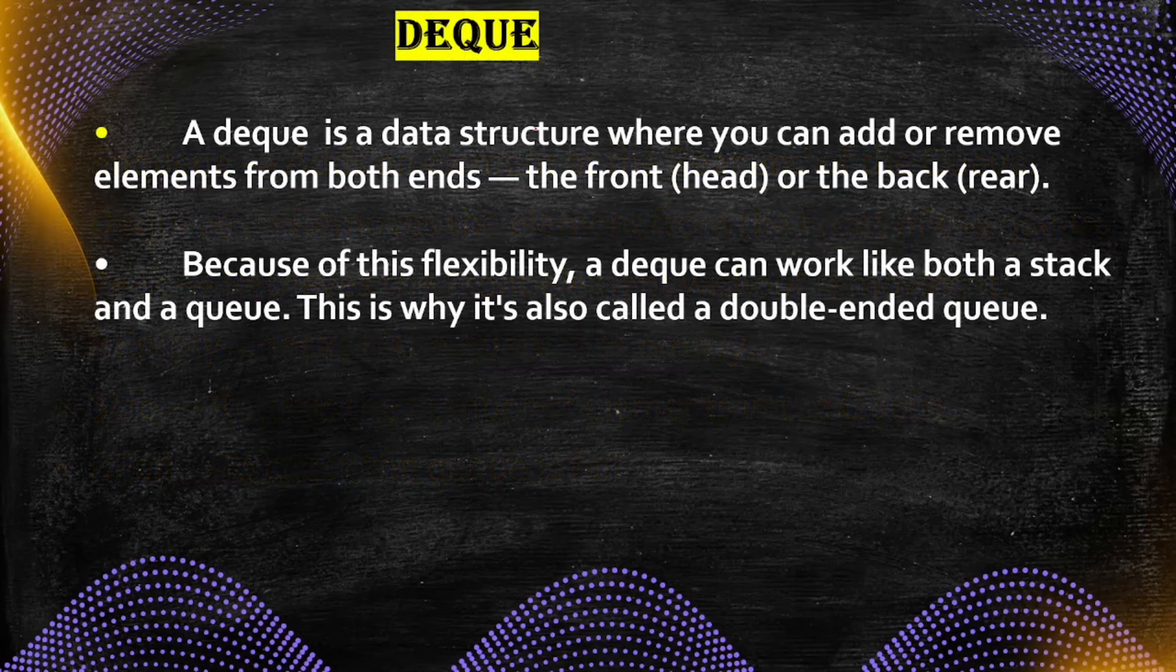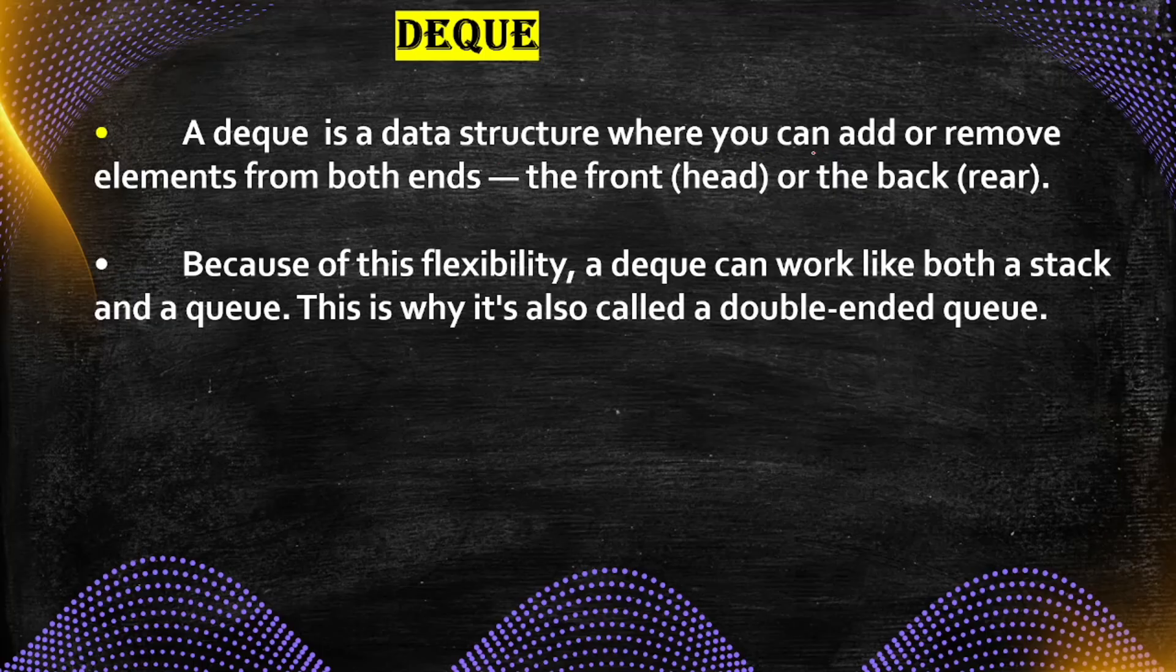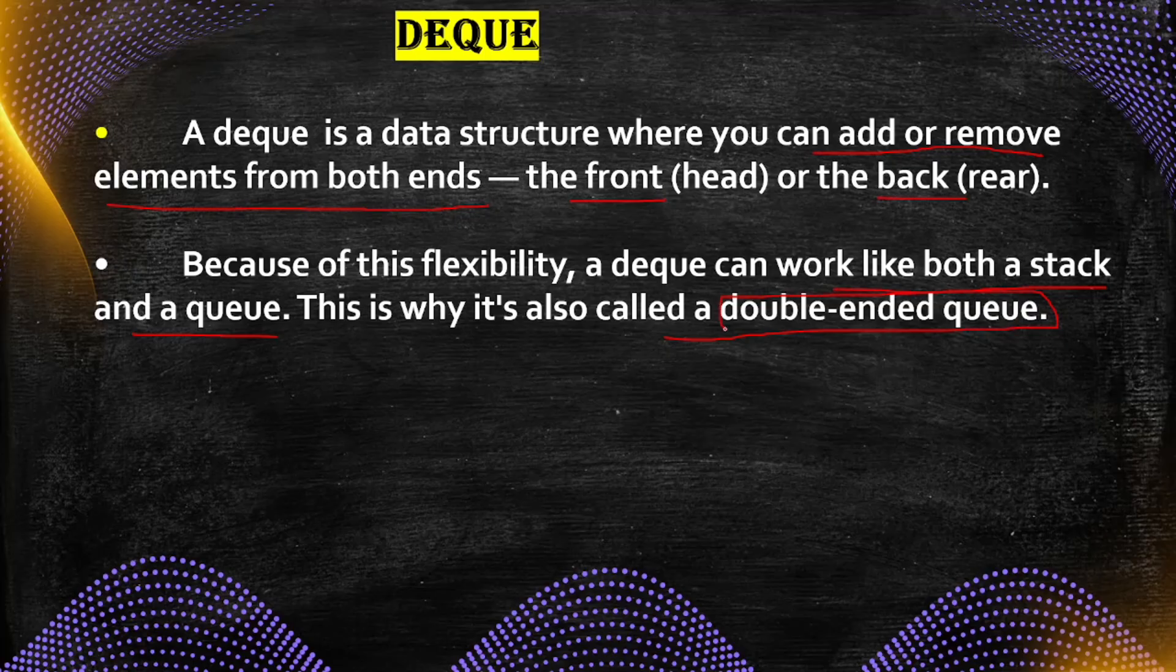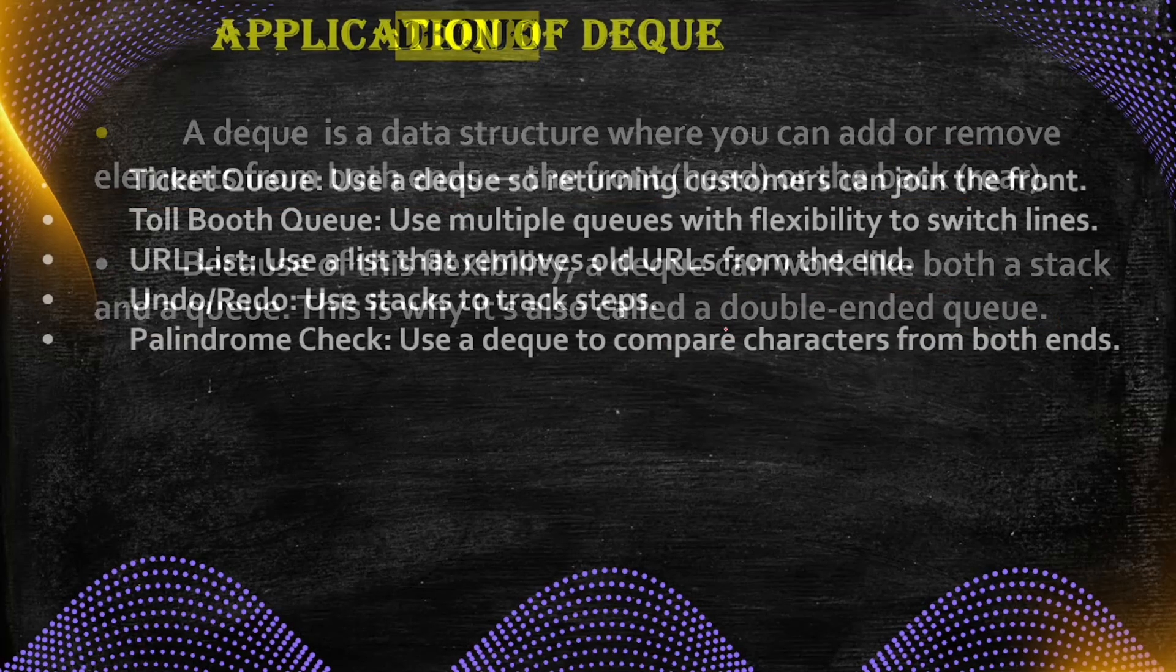What is a Deque? Deque is a data structure where you can add or remove elements from both ends. This is very important keyword here. Front and back, anywhere you can add and remove. Because of the flexibility, a deque can work as both a stack and queue. This is why it is called a double-ended queue.